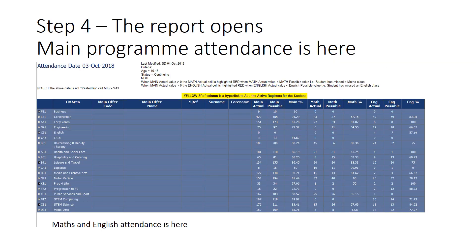The report opens and it provides the main attendance on your main programme — the vocational bit that the students all like. It will also show you the attendance on English and maths just for the previous day, allowing you to really focus on what was happening yesterday. Click on that, go along to the next section, and click on your department — the one you're interested in reviewing.